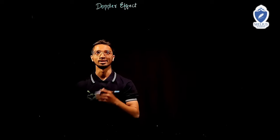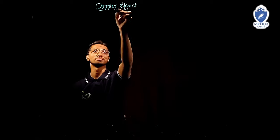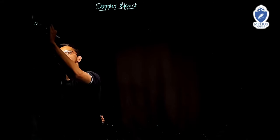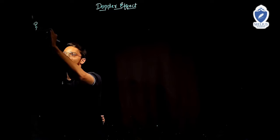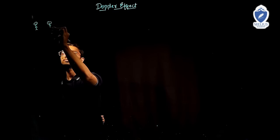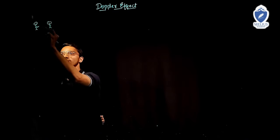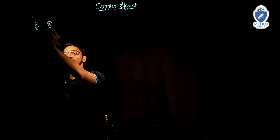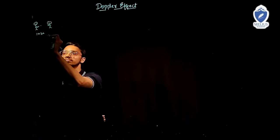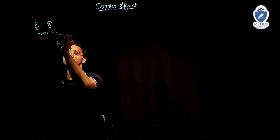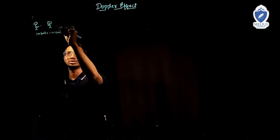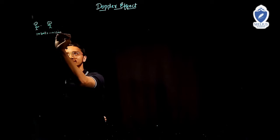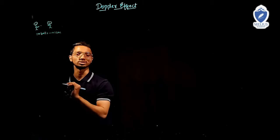What do you mean by Doppler effect? Let us try to understand by example. Let us assume there are two friends here. One is throwing the ball and the other one is catching it. Let us assume he is throwing 10 balls in one second, so he will catch 10 balls in one second. Now, if he stays there and catches the balls, he can catch only 10 balls in one second.